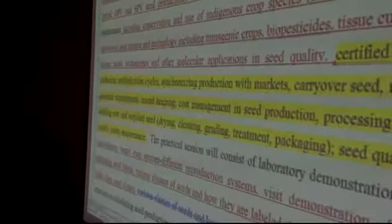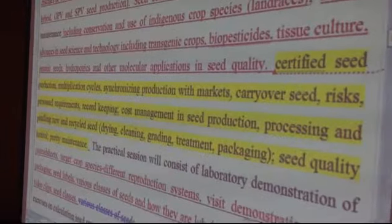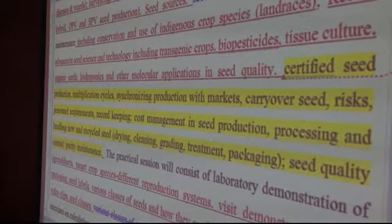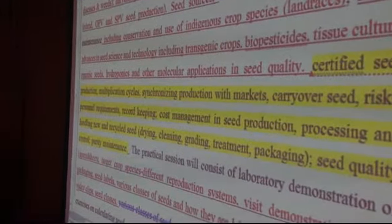Those are the issues we thought would be added in that particular course. Some of these issues — the ones in yellow — we are still discussing. We are hoping to integrate some of them in the next courses, like certified seed. But production, drying, grading, treatment, and packaging will still be under this course on production.